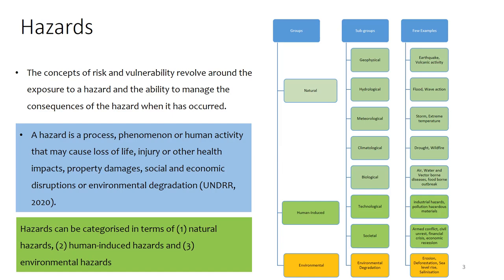We also have human-induced hazards as another category. I can further group these in terms of technological and societal. Technological will include pollution and industrial hazards. Societal covers civil wars, political unrest, social unrest, economic recession, and financial crises. Environmental hazards can include environmental degradation such as deforestation and soil erosion, among others.